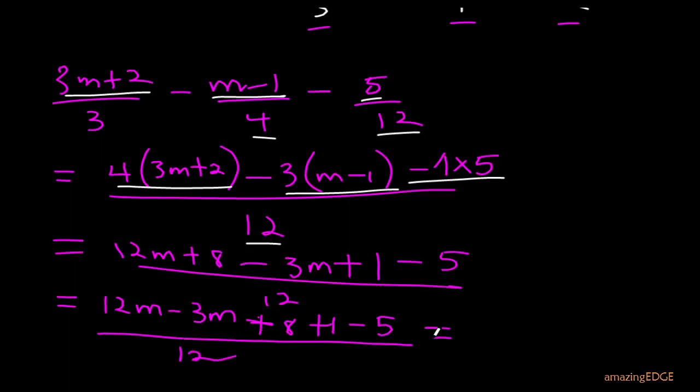So we have done factorization by grouping. So that is what we now give us. Remember 12m - 3m. So here now, 12m - 3m will give us 9m. So we have this to be 9m. Then again, we look at 8 + 1. So we have here is 8 + 1, which is 9. And 9 - 5 will give us 4.